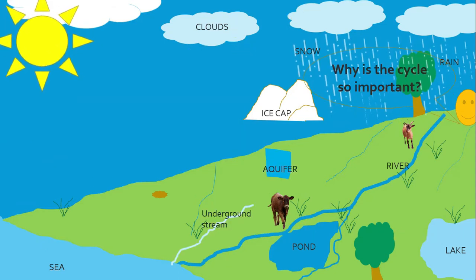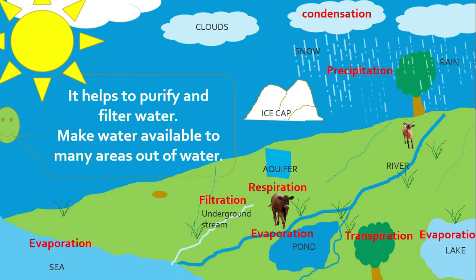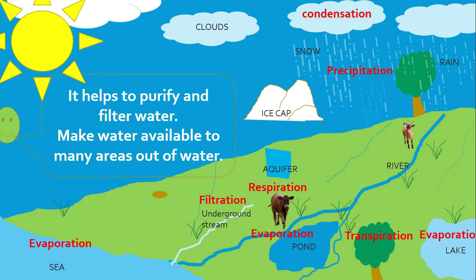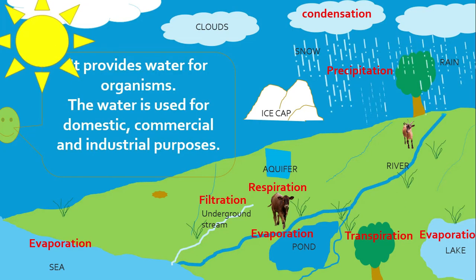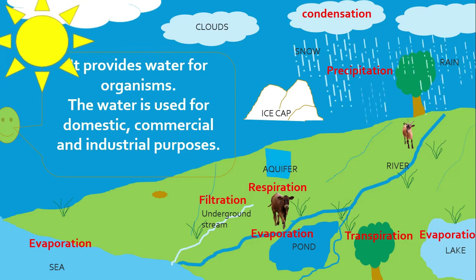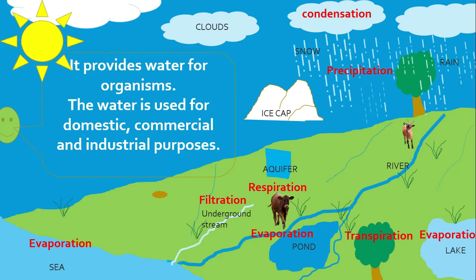Why is the cycle so important? It helps to purify and filter water — that's one. It makes water available to many areas that are out of water — that's two. It provides water for organisms. The water is used for domestic, commercial, and also industrial purposes.